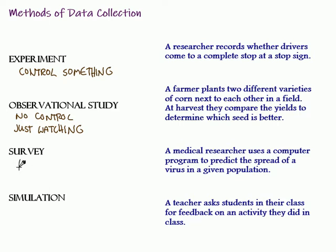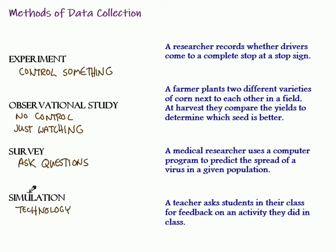A survey is where we ask questions about something to see what's happening, and we can choose lots of different sampling methods to decide who's going to respond to that survey. A simulation is where we use technology to simulate something rather than it actually happening. Simulations are helpful for making predictions about something that might take way too long to observe in real life, and also things that are just too big to experiment with — for example, the weather. We use simulations, and you often hear about different weather models used to predict storms. Simulations are used very often with weather forecasting.